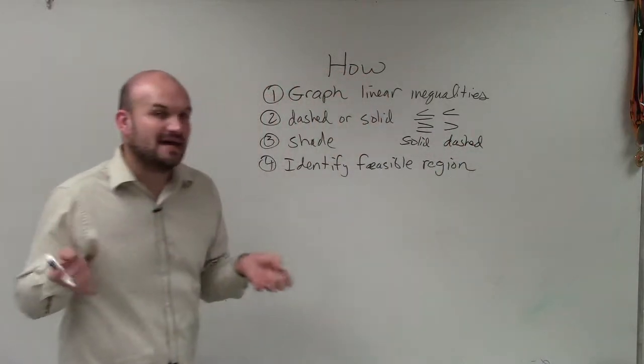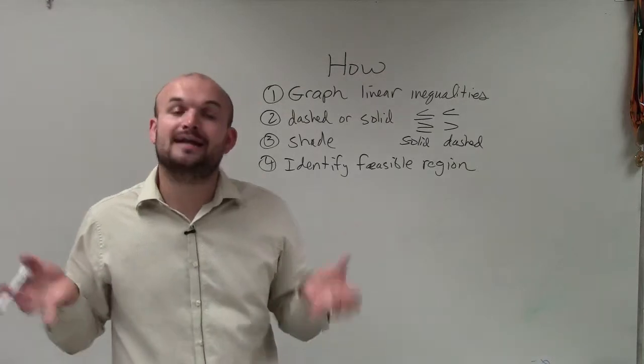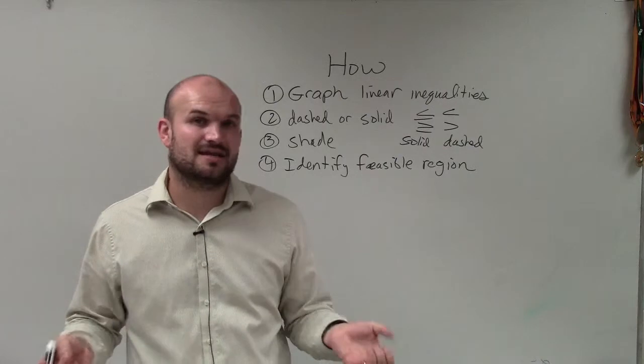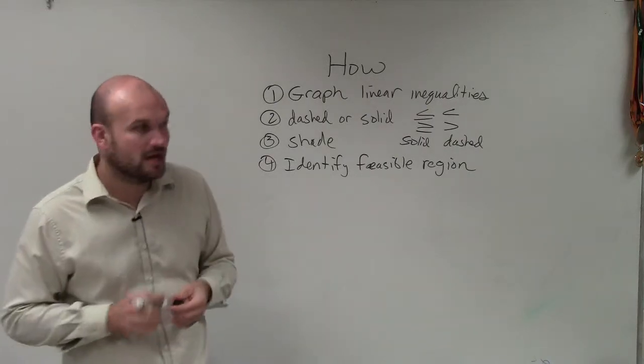The difference is, solid lines means the points on that line are part of the solution. Dashed lines means those points are not part of your solution for the system.